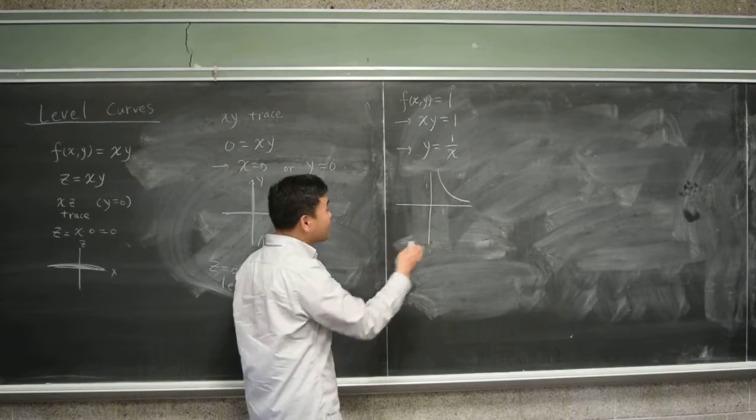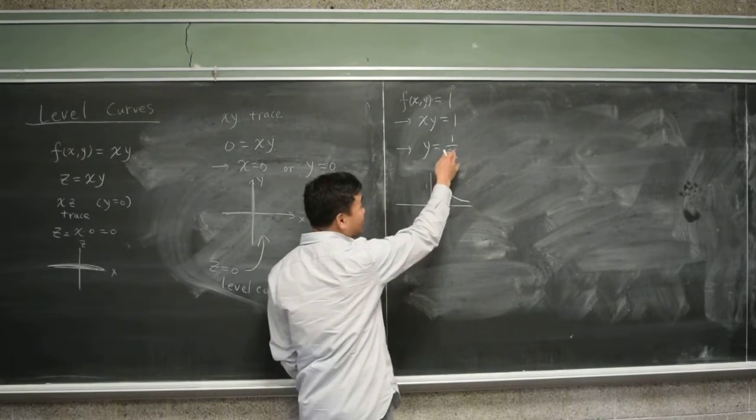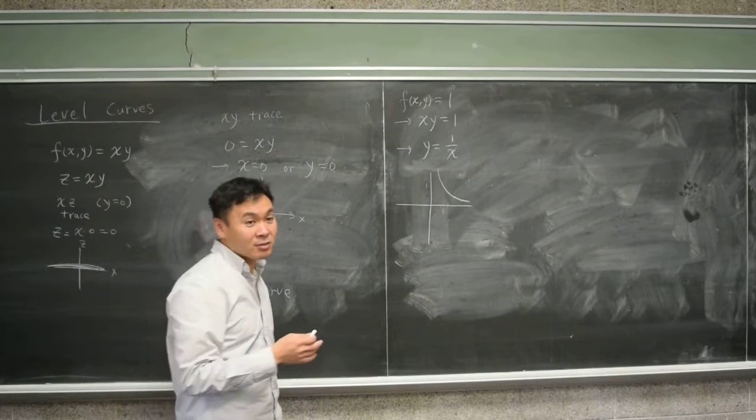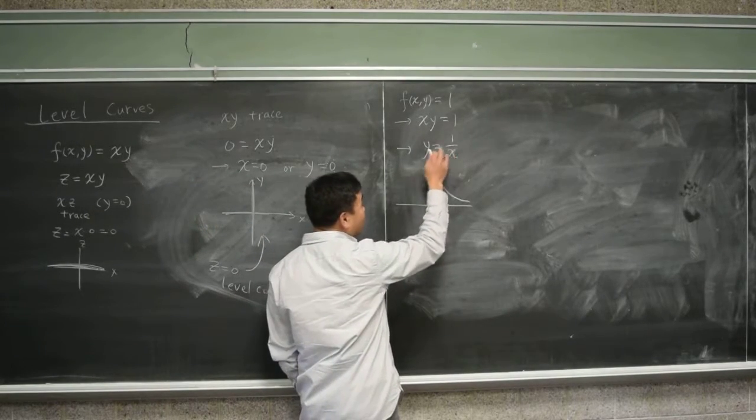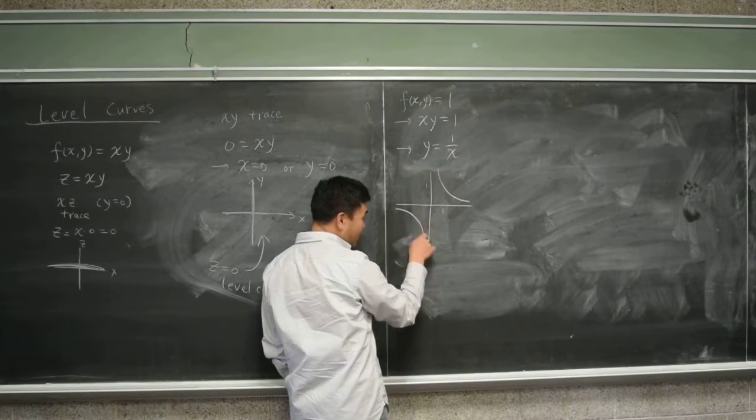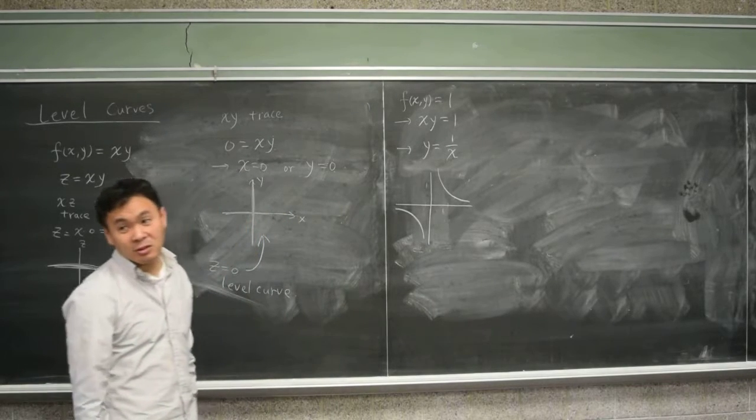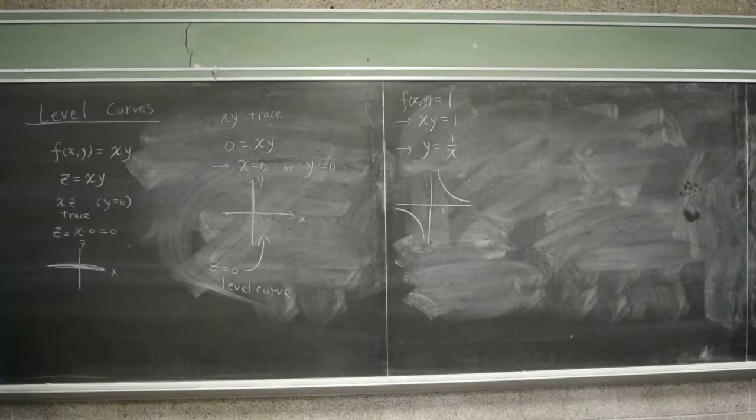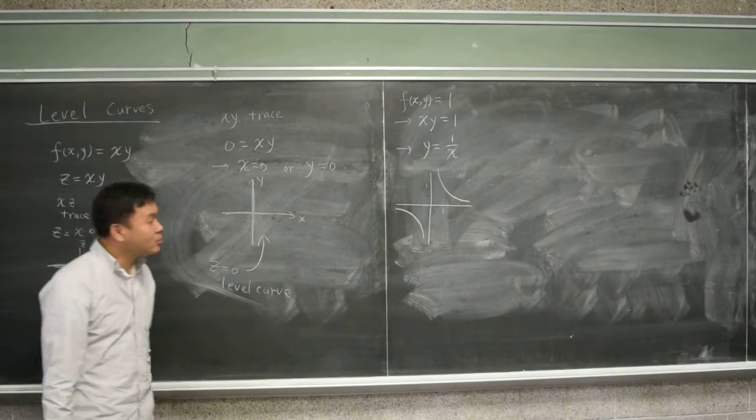But when you come to pre-calculus, you extend the domain to the negative side. So you also have to think about what happens when x is negative. And when x is negative, y is also negative, so you end up with a graph in the third quadrant, because x and y are both negative. So that's the graph that you get.